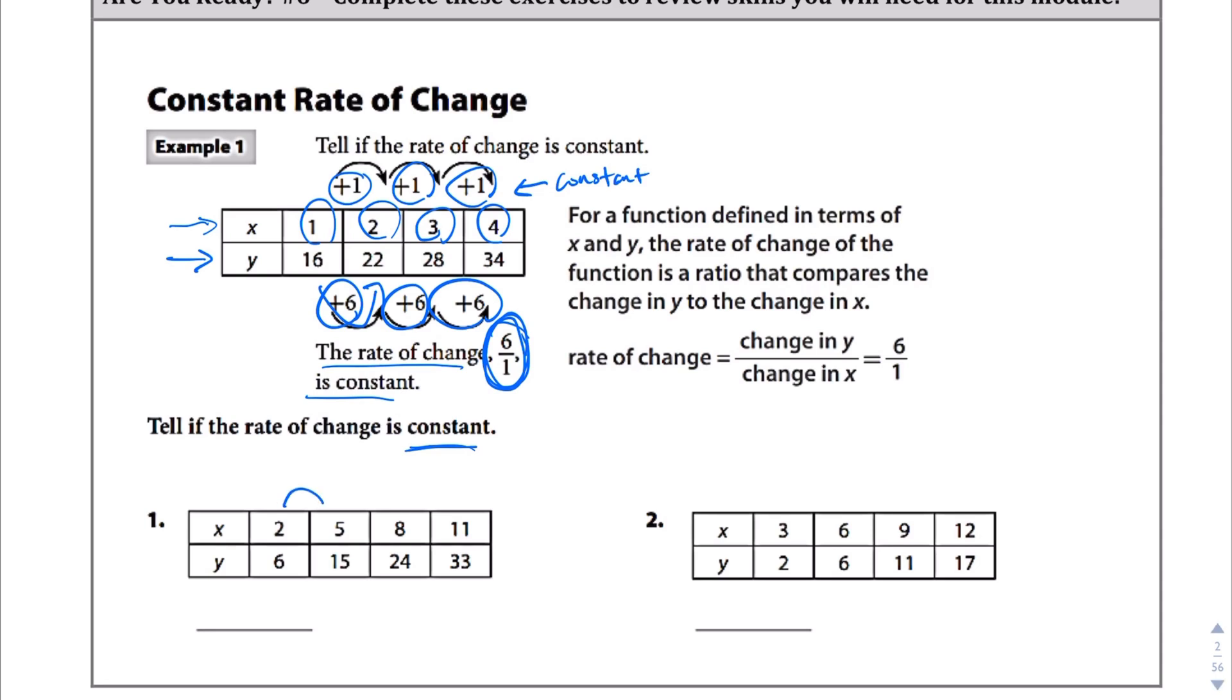So if we look at question number 1, from 2 to 5, we did a plus 3 there. We added 3. From 5 to 8, we added 3. From 8 to 11, we added 3. So a little mental math. From 6 to 15, it looks like we added 9. From 15 to 24, we added 9. And from 24 to 33, we added 9. So we can see those are all the same. They're plus 3 all across the board, plus 9 all across the board there. So we say, yes, it is constant.